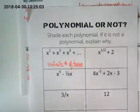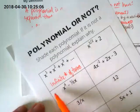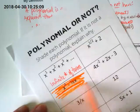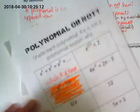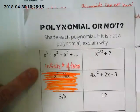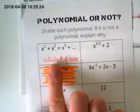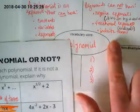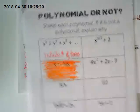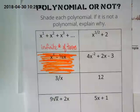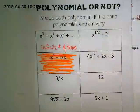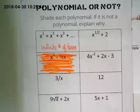So here's my expectation of you. I would like you to get markers or highlighters, and if it is a polynomial, you're going to fill it in. If it is not a polynomial, you're going to write why it's not. Because it's an infinite number of terms. I'm going to give you guys about seven minutes to work on this. Our goal is when you finish, you're making your mini booklet. And we will be moving on after those two.